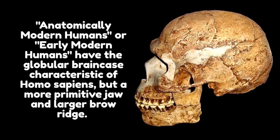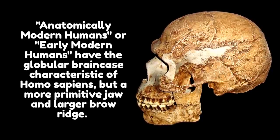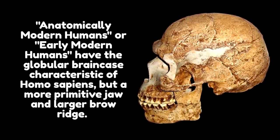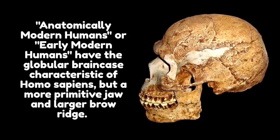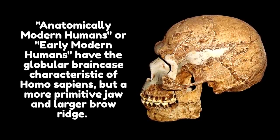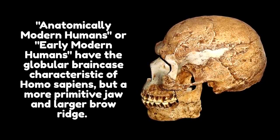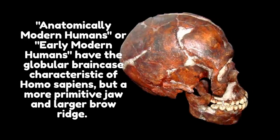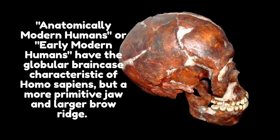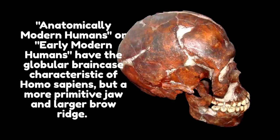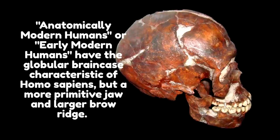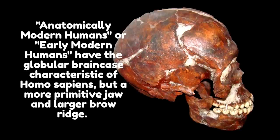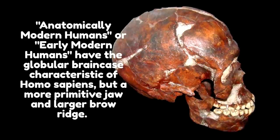The terms early modern human and anatomically modern human are used to distinguish between Homo sapiens, the only living hominin species, and extinct archaic human species. Homo sapiens is anatomically consistent with the range of phenotypes seen in contemporary humans. This distinction is particularly important for eras and areas where anatomically modern and prehistoric humans coexisted, such as the Paleolithic period in Europe.